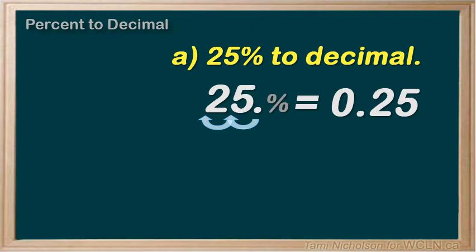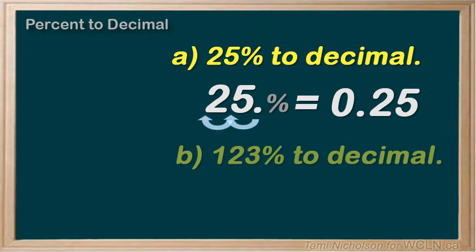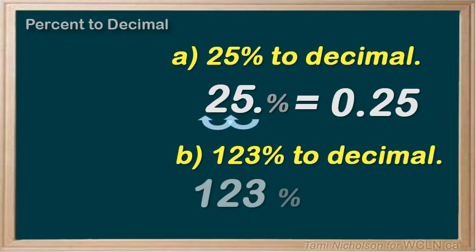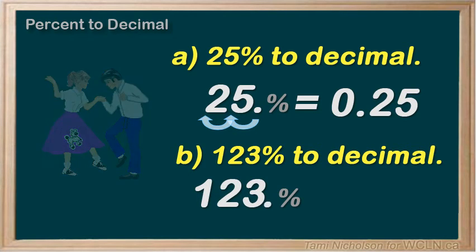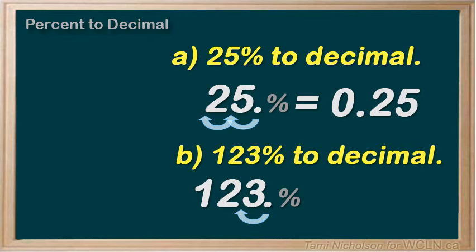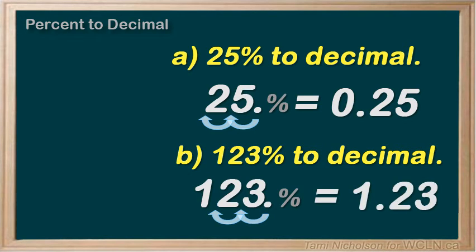Here we have 123 percent. Divide by 100. Do your decimal dance — move the decimal point two spaces to the left: move one, move two, and 123 percent equals 1.23. Make sure there is no percent sign. Voila! You have 1.23.